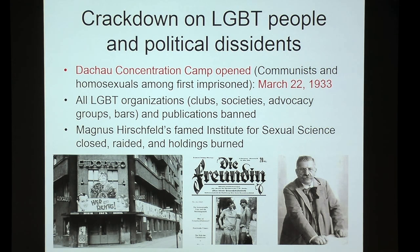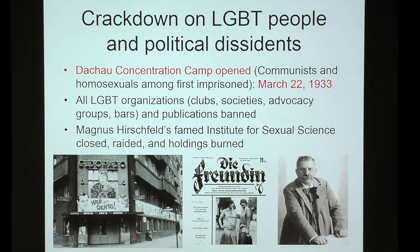The gay bar El Dorado in Berlin — its sign read 'here everything's okay' — was shut down in 1933. Die Freundin, a lesbian publication, and all LGBT publications were banned. We're talking less than two months after Hitler came to power.